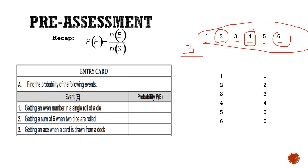What will be the total possible outcomes in rolling a die? 1, 2, 3, 4, 5, 6 — there are 6 total possible outcomes. So the probability of getting an even number in a single roll of a die is 3 over 6. Dividing both numerator and denominator by 3, we get 1 over 2, or 0.5.